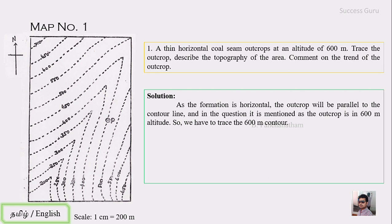Since the formation is horizontal, it has a fixed height from the mean sea level — that is why we call it a horizontal formation. Contours are imaginary surfaces that also have a fixed height from the mean sea level. Therefore, a horizontal formation will always be parallel to the contours in that region. The coal seam is outcropping at 600 meters altitude, which means we simply have to trace the 600-meter contour.